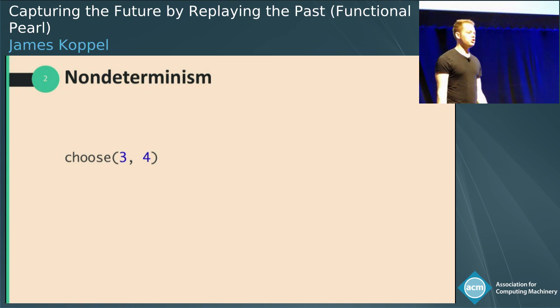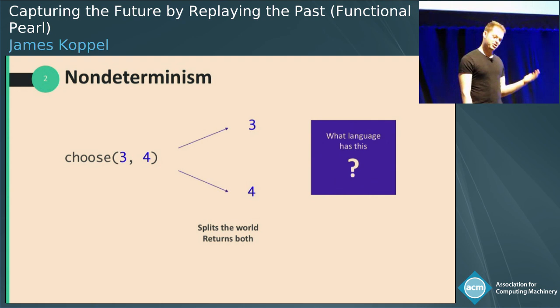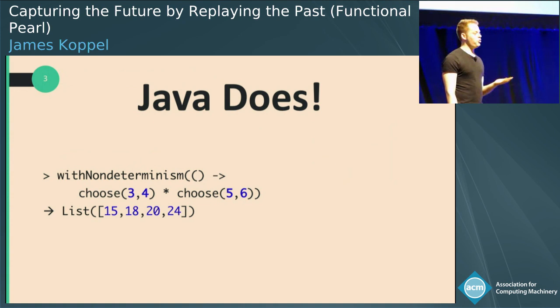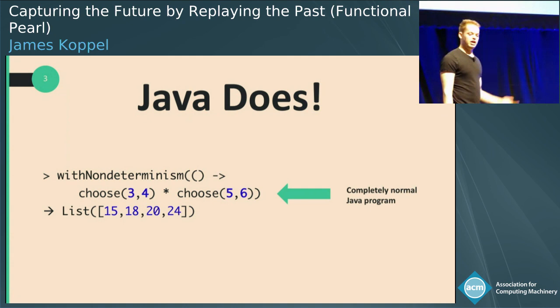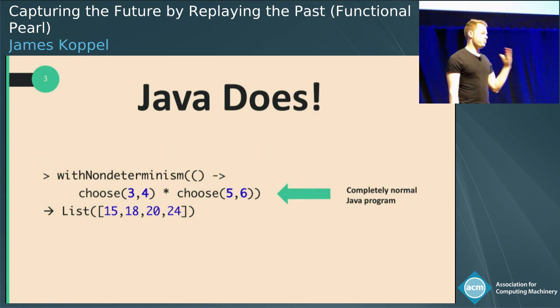One such effect is nondeterminism. Choose three, four — it does not return three, it does not return four, it actually returns both. It splits the world and returns one in each branch. Can you name a language that can do this? Two, three, four times choose five, six returns any and all of 15, 18, 20, 24. And we have this running — this is a completely normal Java program. We don't do a special prepass to transform the program, we don't have a special compiler. It's just normal Java code.